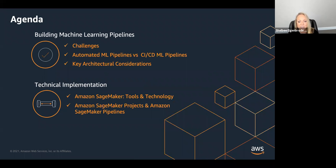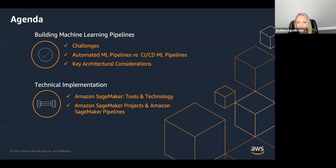Here's the agenda for today. We're going to cover technology-agnostic considerations, then we'll talk about the array of tools and technology available for implementing MLOps practices, machine learning pipelines, and CI/CD pipelines. We will dive deeper into specifically SageMaker Pipelines and Projects when we talk about a core implementation.